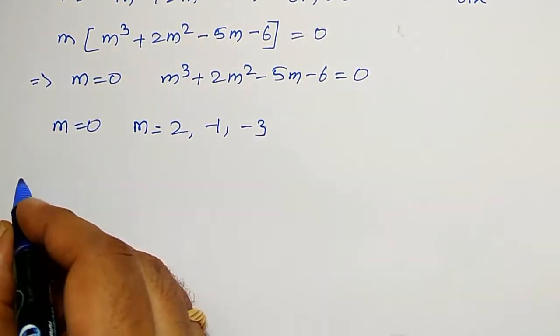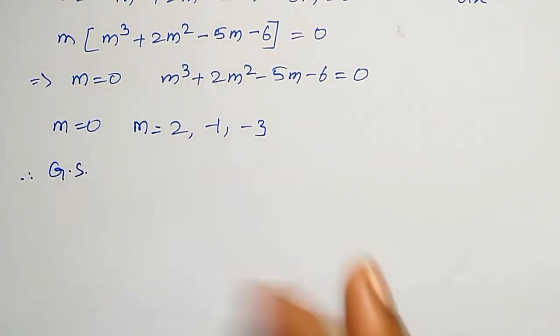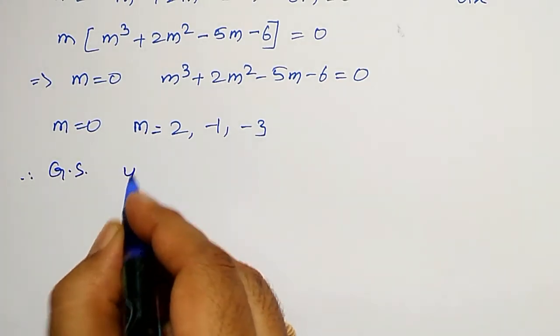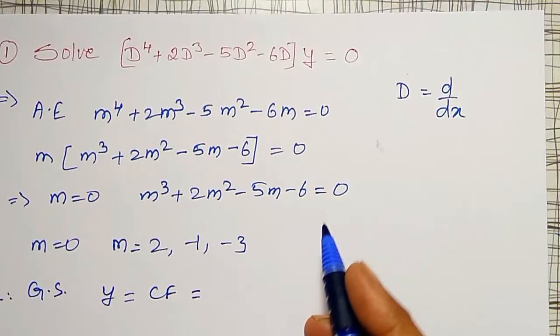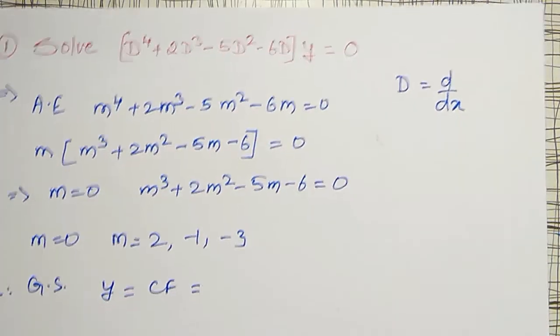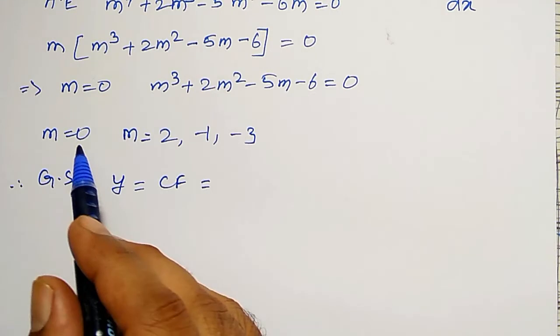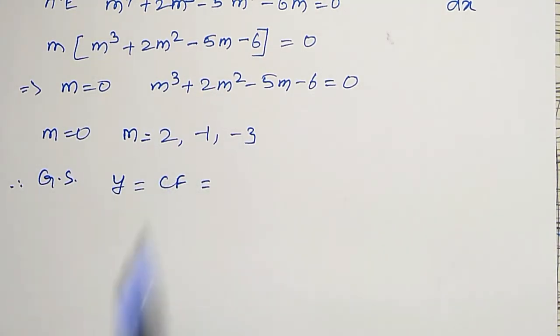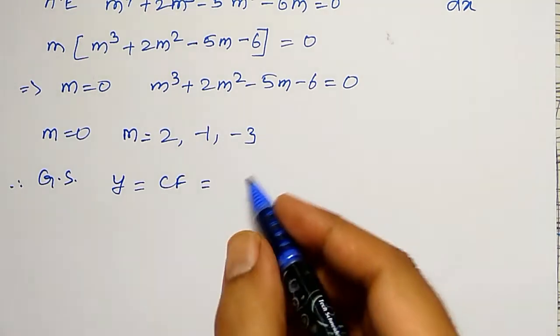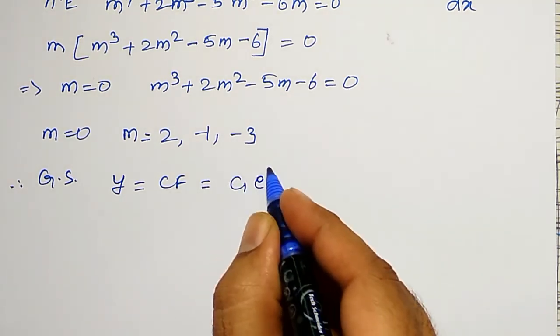Therefore, my general solution, that is, y is equal to cf only, because the right hand side is 0. It is a homogeneous equation. Therefore, we can observe here all the 4 roots are distinct. Therefore, the general solution is nothing but c1e to the power 0x,